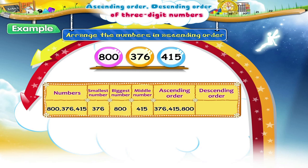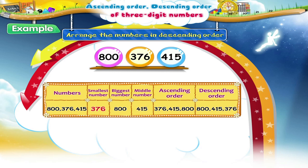Now, for the descending order, we will arrange the numbers starting from the biggest number. So the descending order is 800, 415 and 376.